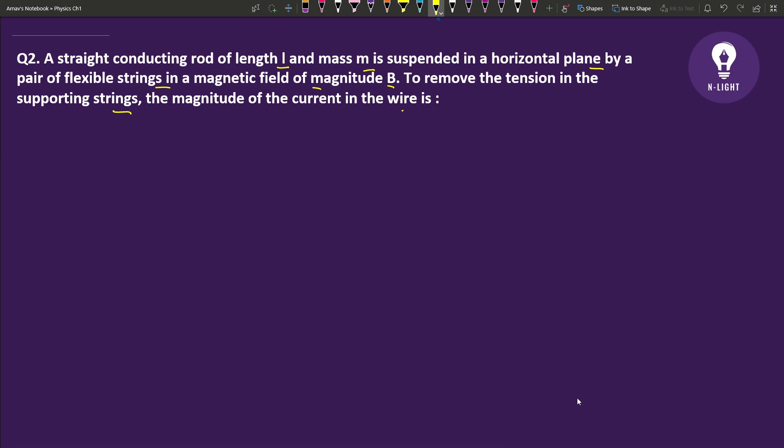We have given here one rod. We have suspended it with flexible strings, here are the strings, which is suspended in a magnetic field of magnitude B. Length is L, rod is L, and mass is M.